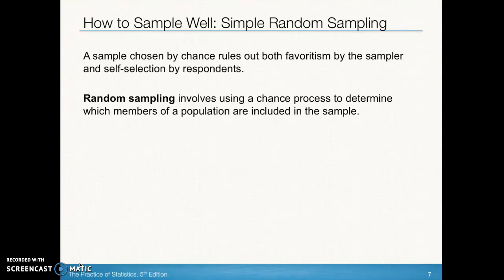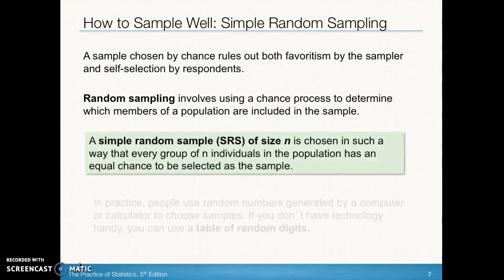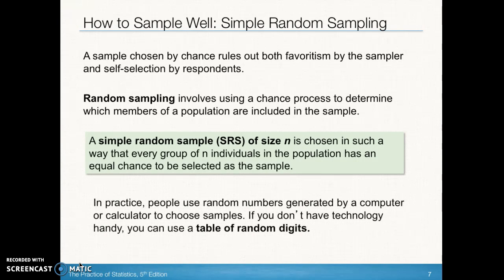A better way of sampling is what we call a simple random sample. This involves a chance process such as names being chosen out of a hat. A simple random sample allows every individual and every group of individuals the same probability — an equal chance — to be selected and be part of the sample. It must satisfy both requirements: every individual has the same probability of being chosen, and every group of size n also has the same probability of being chosen.